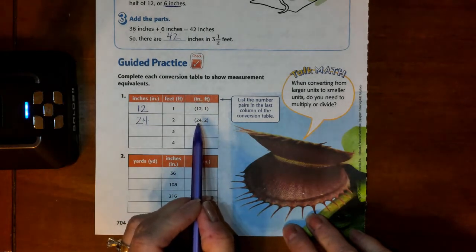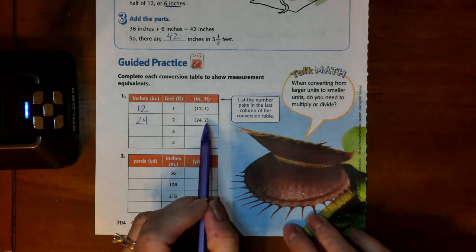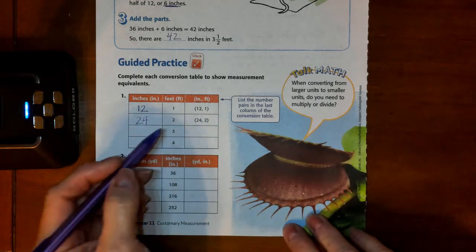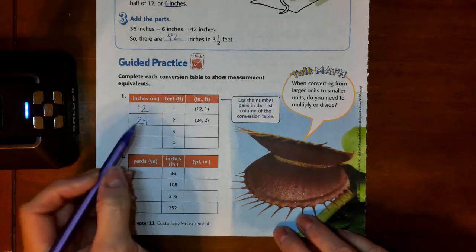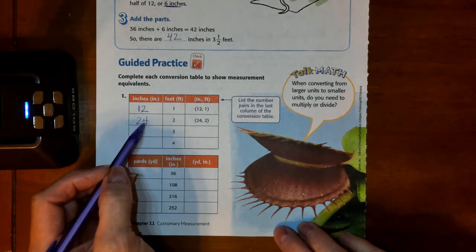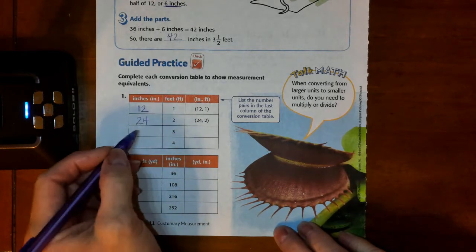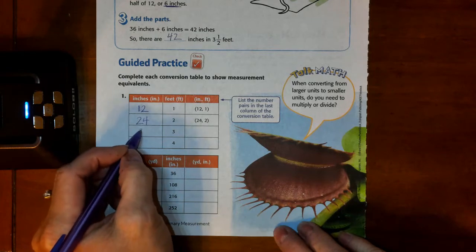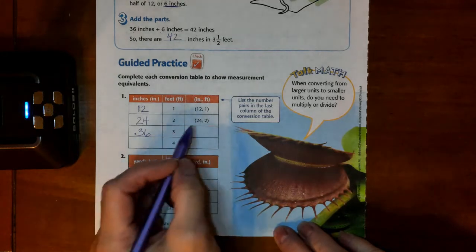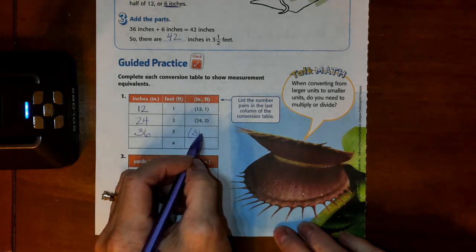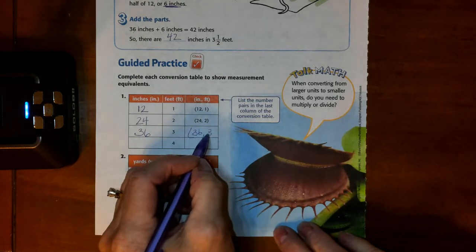And you can see right here, they listed the inches first and then the feet. So, if we have 3 feet, it will again be another 12 on top of this 24 or 12 times 3 is 36 feet. So, we're going to list it over here, 36 and 3.